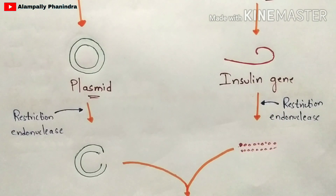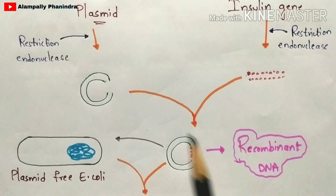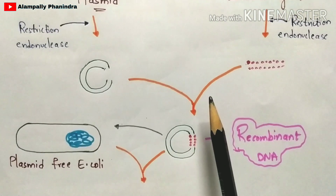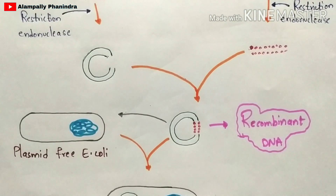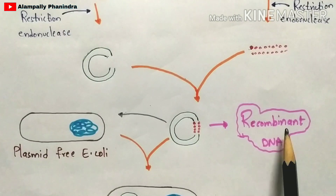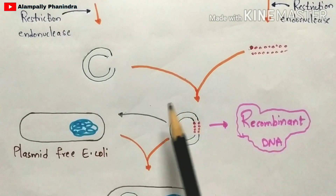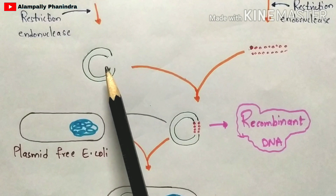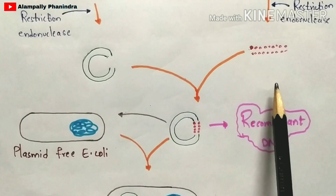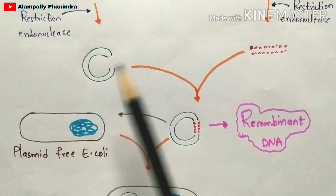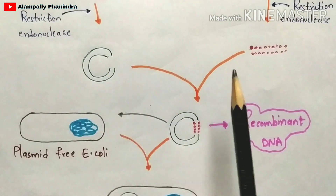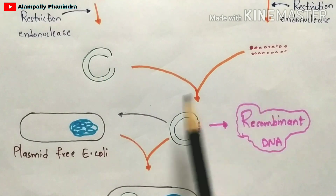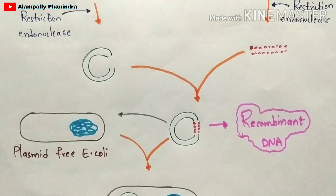The insulin gene is also cut into fragments by the restriction endonuclease. Now you are going to combine — recombine — these two modified genes. Once you recombine them, a recombinant DNA molecule is formed. Recombinant means recombining the modified DNA from two different species: one obtained from E. coli and the other from the human cell. Recombining the genes of both different species forms a recombinant DNA.